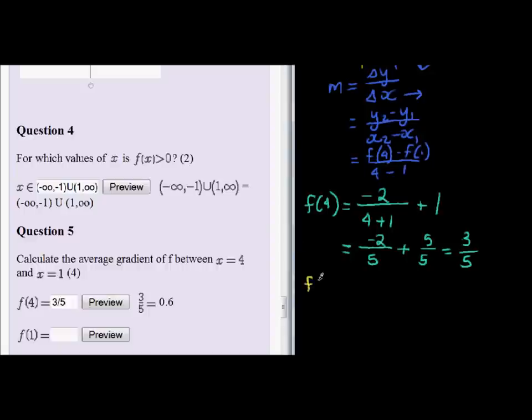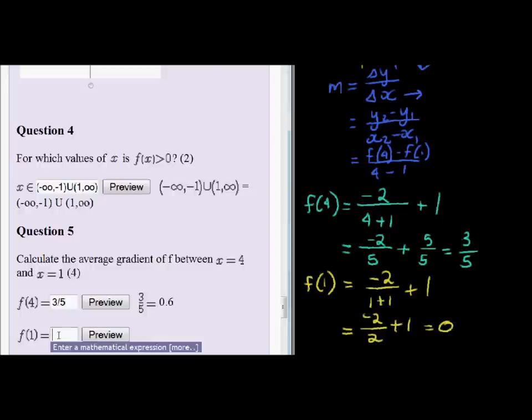How about f of 1? And f of 1, we actually already know, but let's just do that again. Negative 2 over 1 plus 1 plus 1, and that calculates to negative 2 over 2, plus 1. Negative 2 over 2 is negative 1. Negative 1 plus 1 is equal to 0. So this answer is equal to 0.